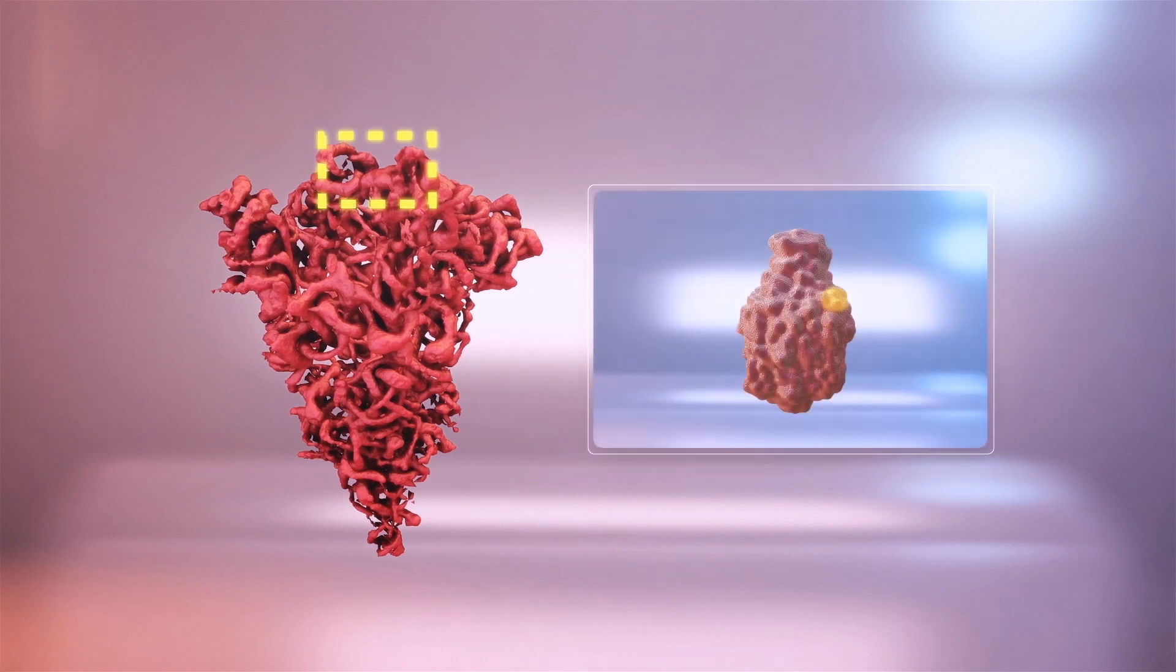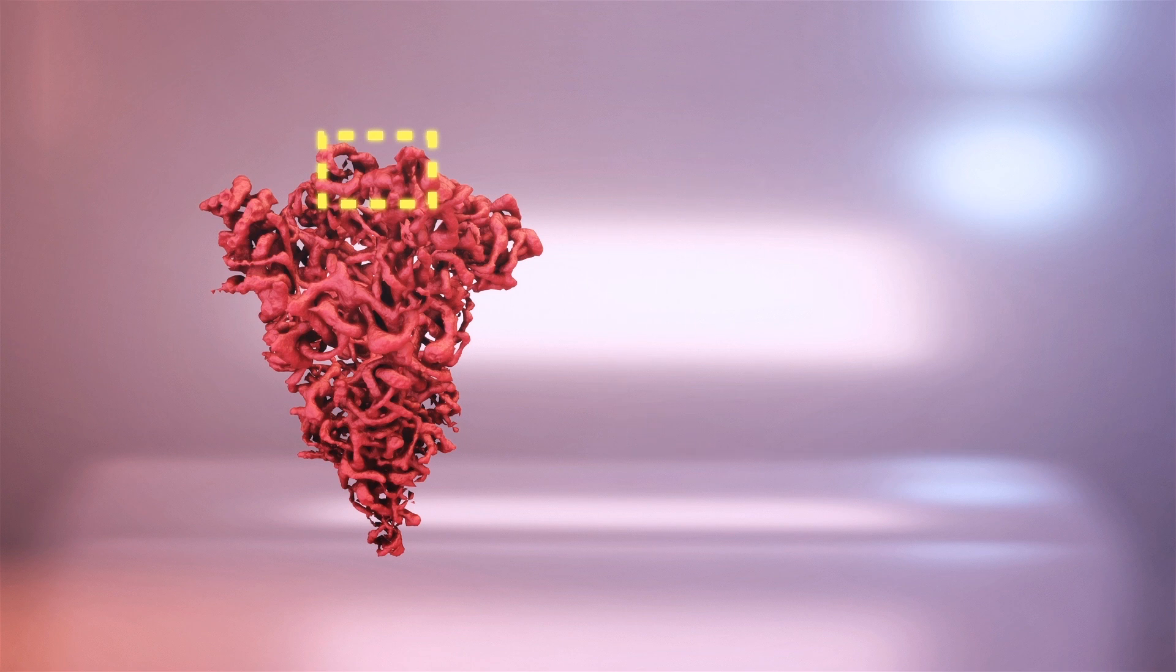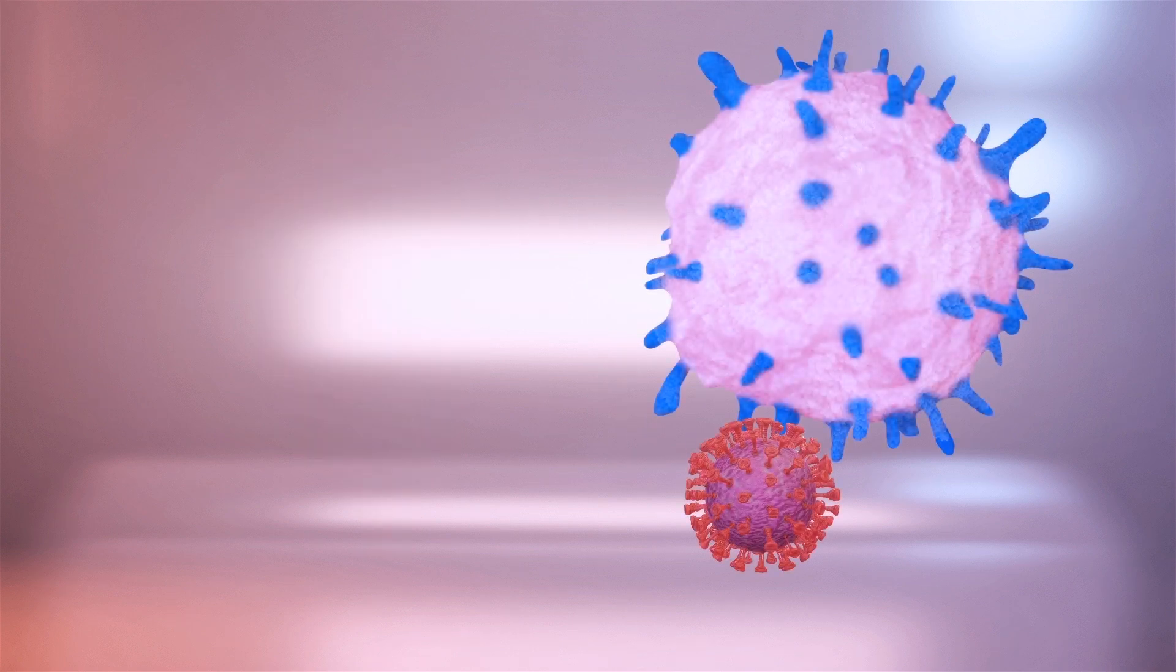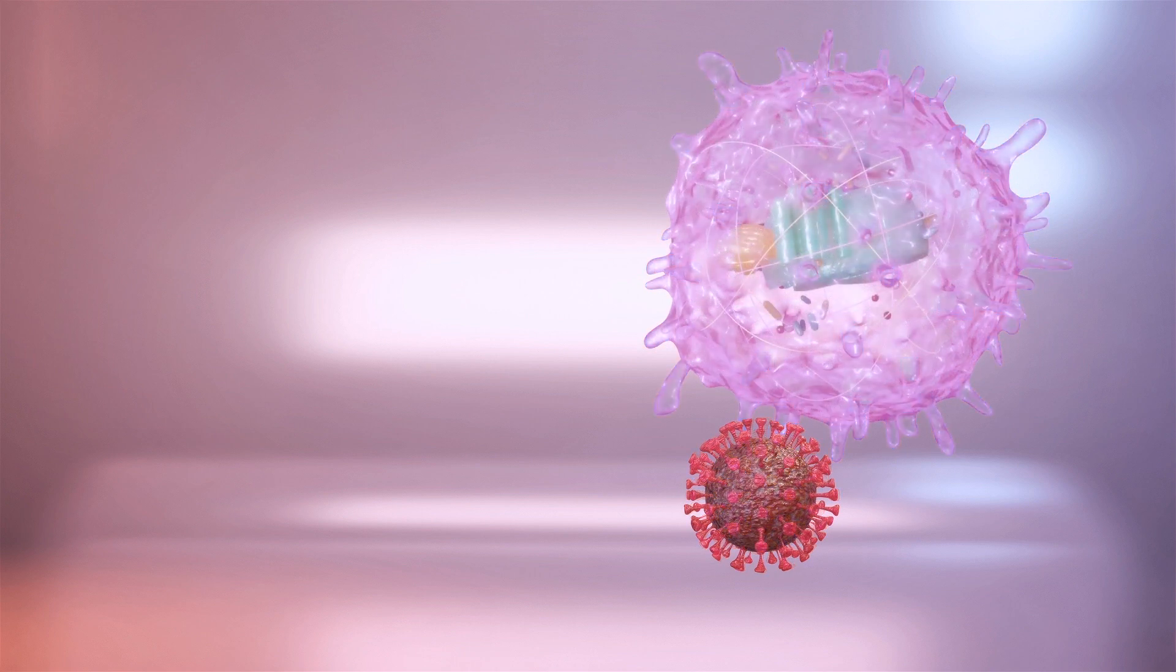The L452R mutation allows the virus to bind to ACE2 receptors on human cells more stably. Once the two are bound together, the cell's membrane engulfs the virus and internalizes it.